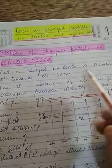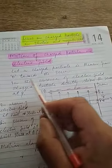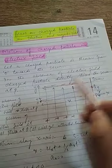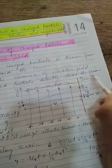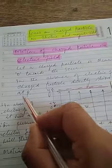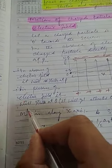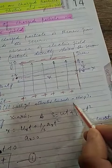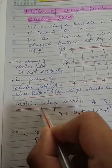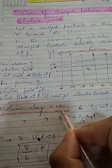Let the charged particle be thrown from O towards the screen. In the absence of an electric field, the charged particle directly strikes the screen at P. In the presence of an electric field, it will strike at Q, attracted towards the negative plate. Now we will find the motion along the x-axis and y-axis.